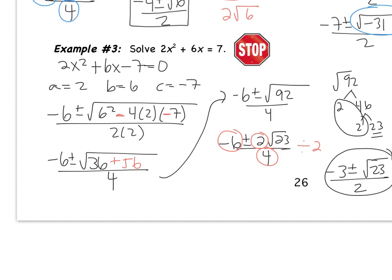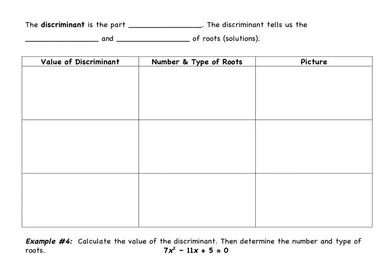That was the quadratic formula — used in one of two ways: to solve quadratic equations, which is what we've been doing, and specifically using the discriminant. Please flip the page and we're going to talk about the discriminant. The discriminant is the part b squared minus 4ac — the part under the root. It tells us the number and type of roots or solutions.